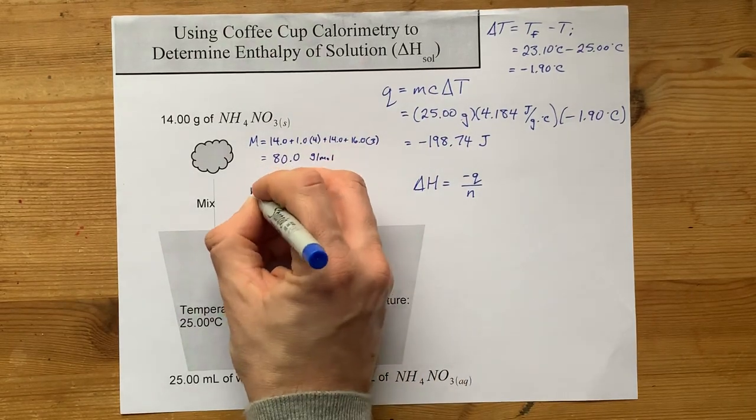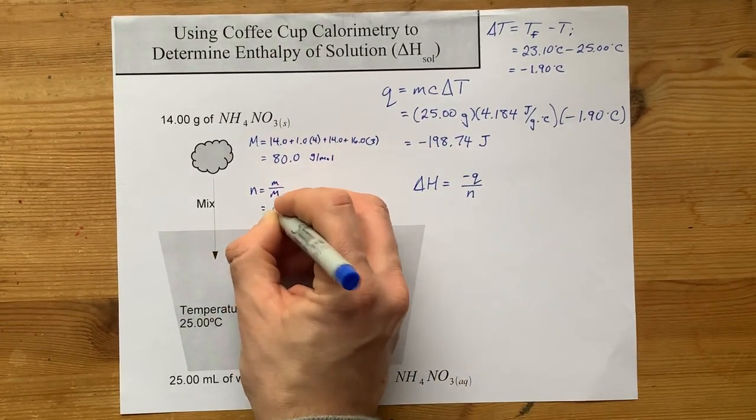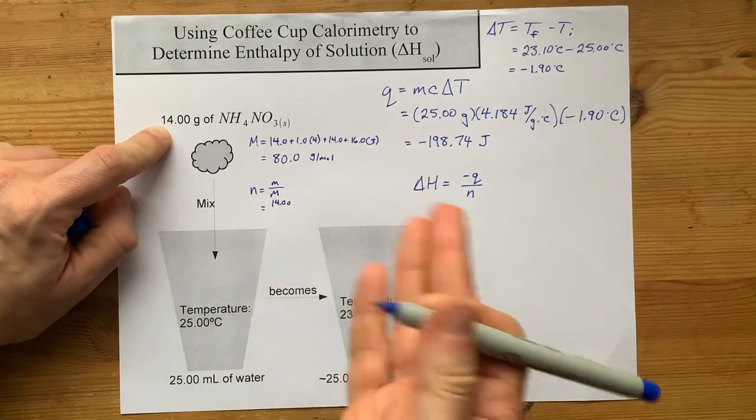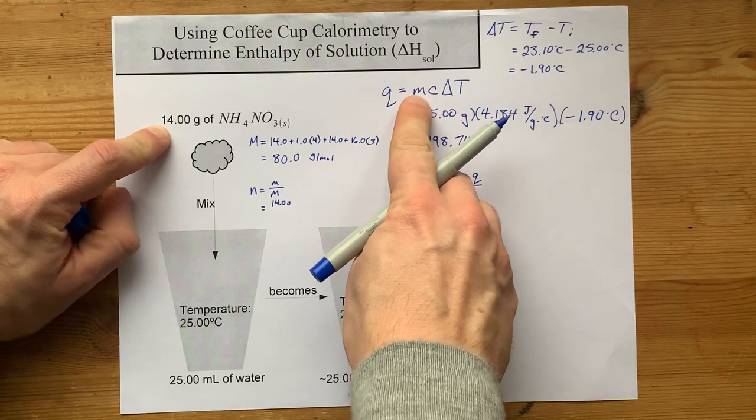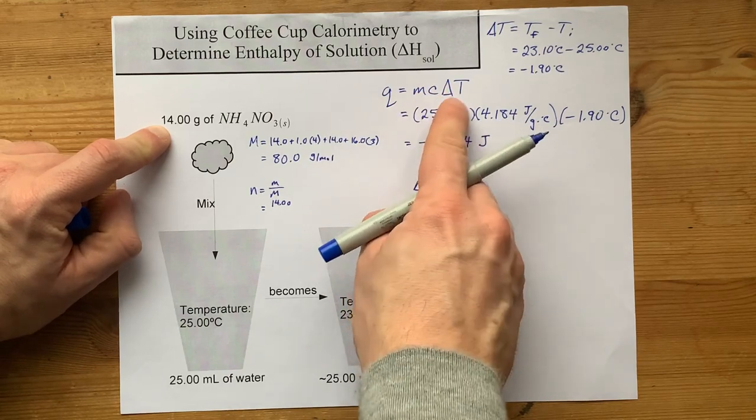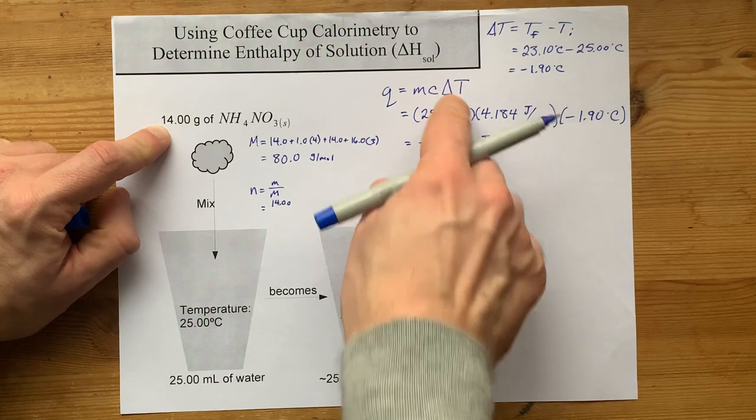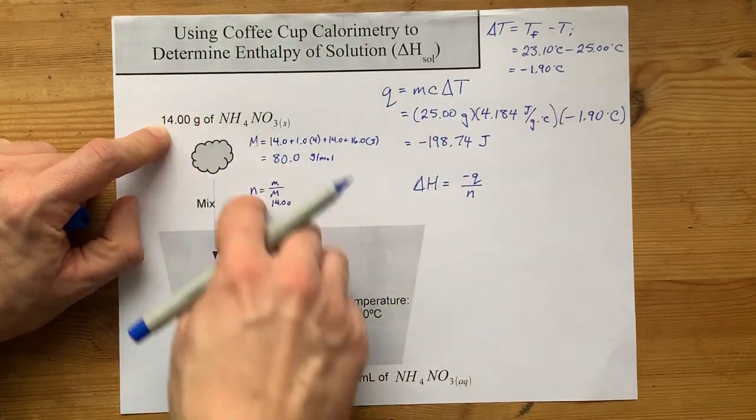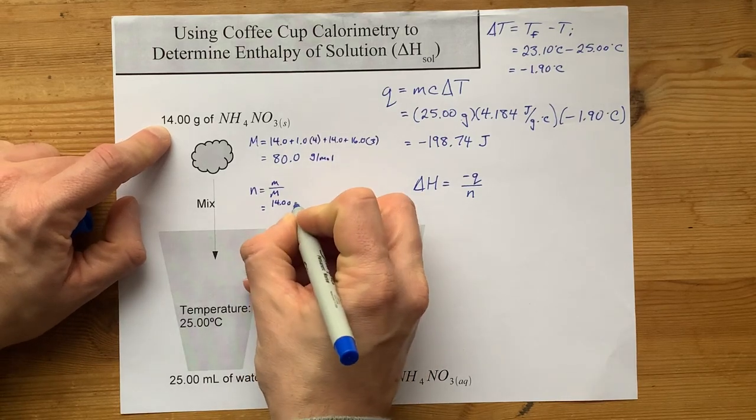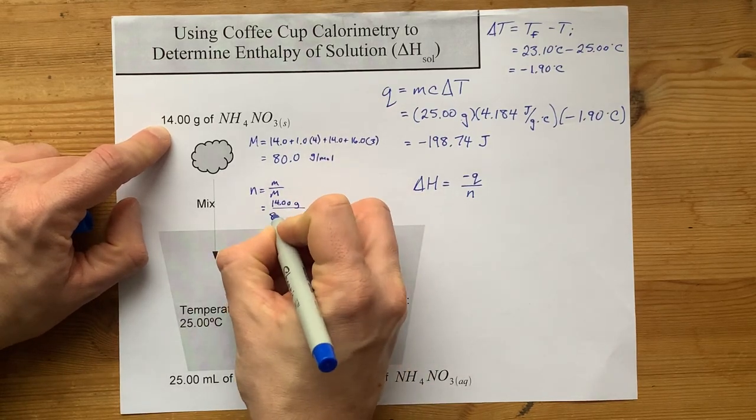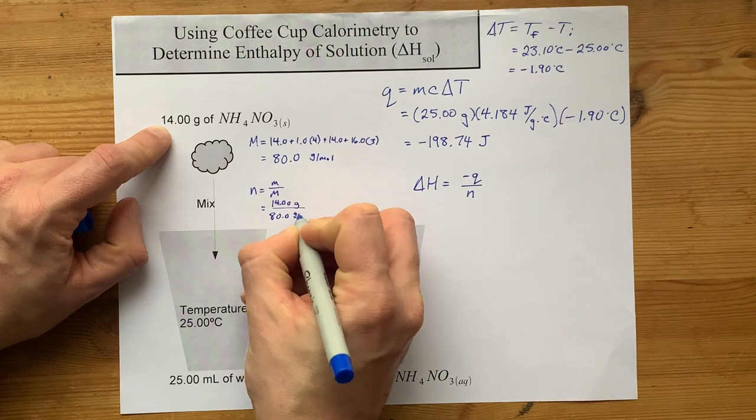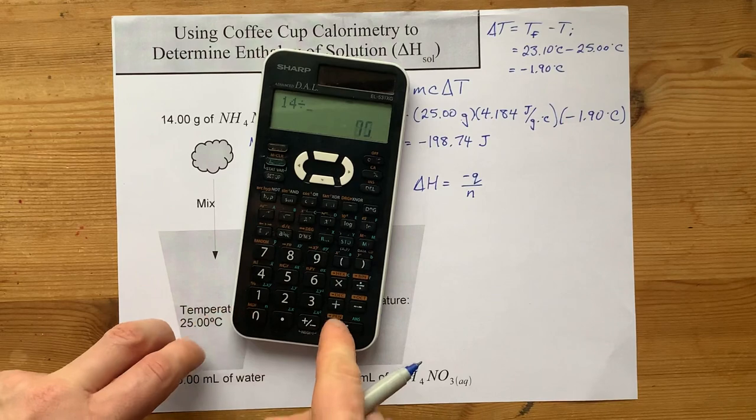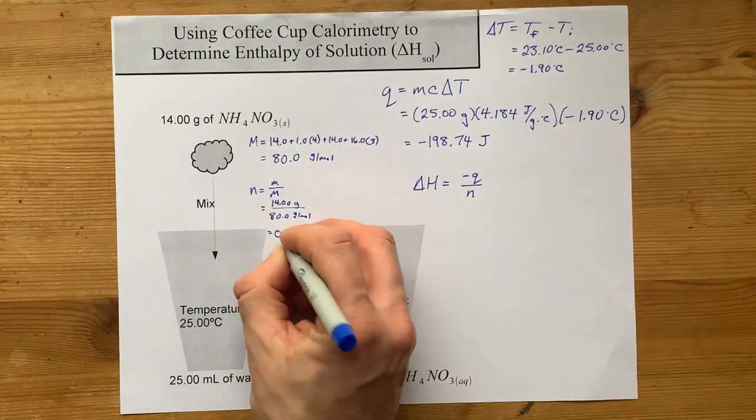So my number of moles, mass divided by molar mass. This is mass of the solid that was dissolved. The M here was for the mass of water, because the water is the thing that was changing temperature. Here, it's how much reacted. This is now moles of the solid. 14.00 grams divided by 80.0 grams per mole. Mr. Calculator can help me with that. 0.175 moles. That's the N that's going to go there.